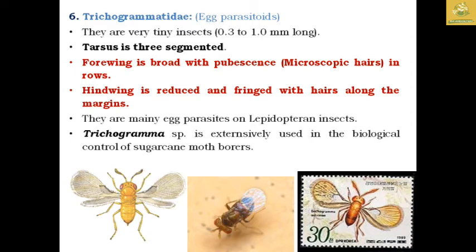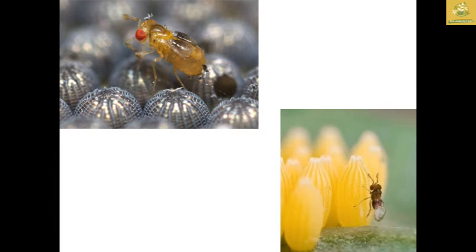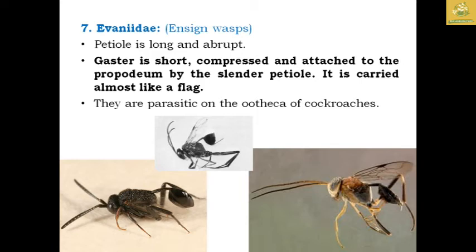The family Evaniidae are known as ensign wasps. The petiole is long and abrupt, and the gaster is short, compressed, and attached to the propodium by a slender petiole, carried almost like a flag. They parasitize the egg cases of cockroaches to rear their young ones.